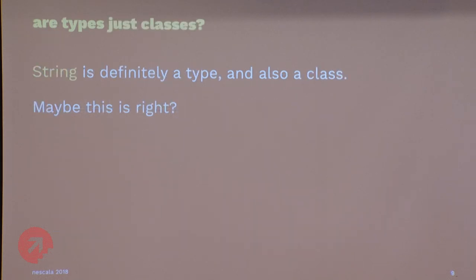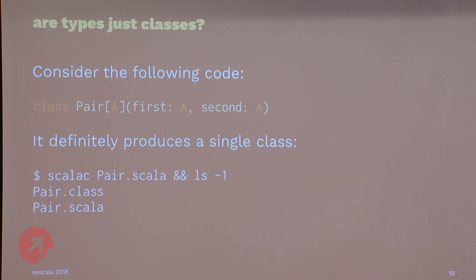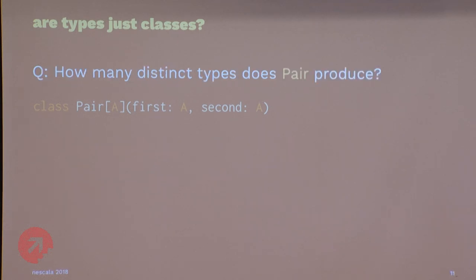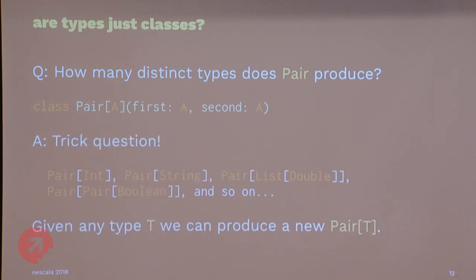So we have four candidates. Let's look at classes — String is a type, it's a class, so maybe types and classes are the same thing. But consider this type called Pair that resembles a tuple. When you compile it there's one class file with one class. However, Pair produces an infinite number of types — Pair[Int, String], Pair[Boolean, Boolean], and so on. These are all distinct types. So classes and types have to be different because there's no one-to-one correspondence.